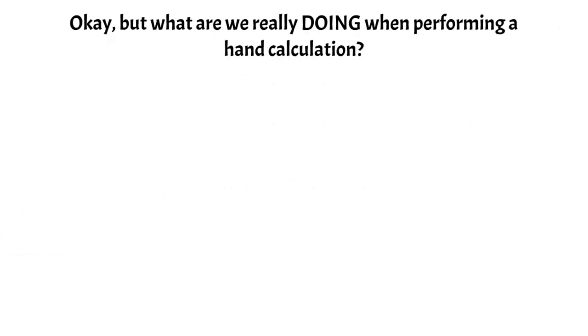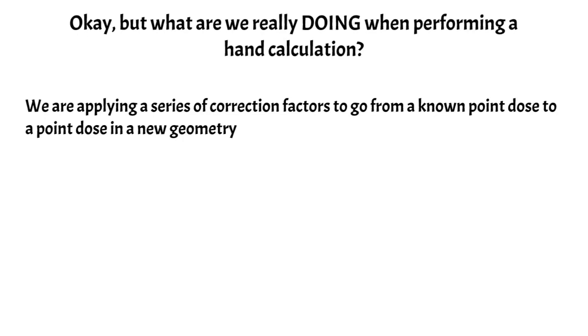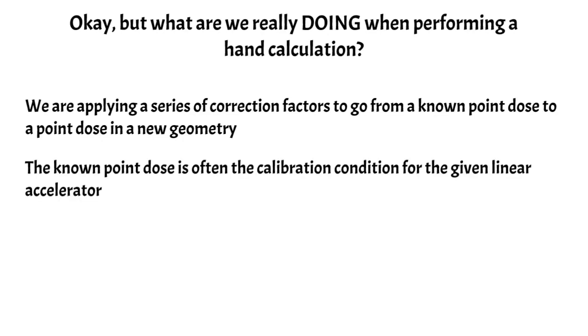So all of that generally makes sense, but it's a little unclear what we're actually doing when we're performing one of these hand calculations. What we're really doing is we're taking a known point dose and we're applying some series of correction factors to that known point dose to get a new point dose in some new treatment geometry. The known point dose that we are altering is often established during the commissioning process and is also called the calibration condition for the given linear accelerator.